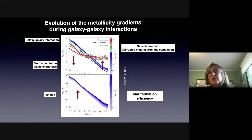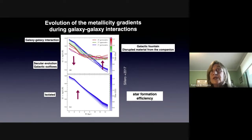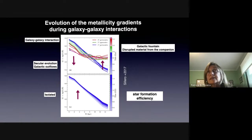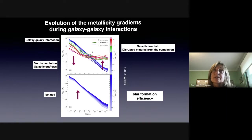In the outer region, the metallicity gradient profiles also change and get flatter and more enriched. This is because of the contribution of disruptive material from the companion and also because of the galactic fountain — material ejected from the central part of the galaxy is accreted in the outer part. All these processes modify and imprint in the metallicity profile.